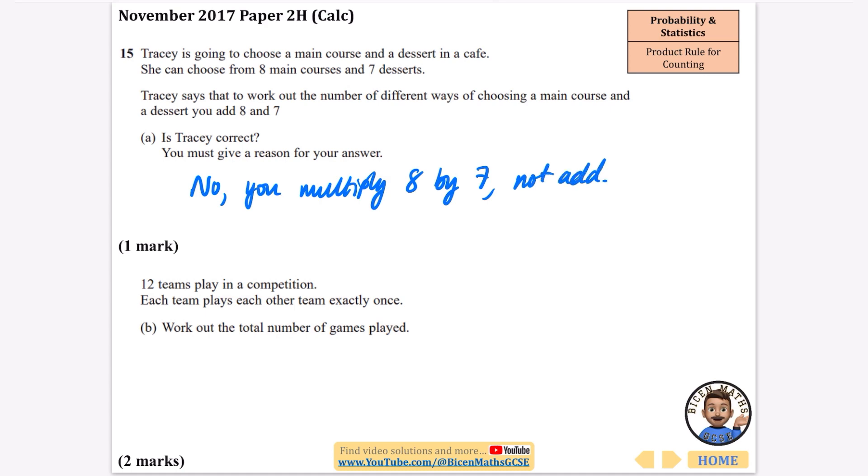Part b says that 12 teams play in a competition. Each team plays each other team exactly once. Work out the total number of games played. Well there are 12 teams to begin with and each team can play 11 other teams, and they're only going to play each other once. So this is going to account for the number of matches twice, so we need to divide by two.